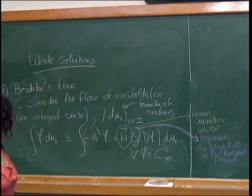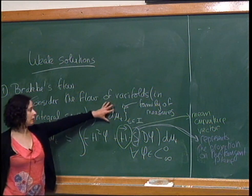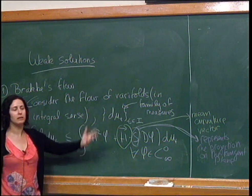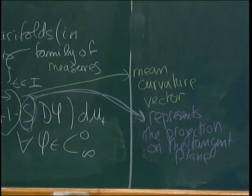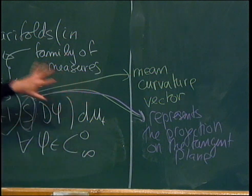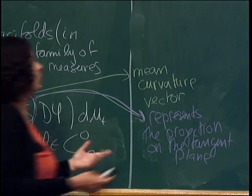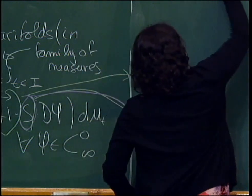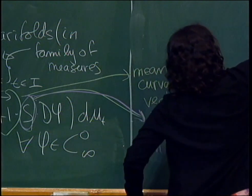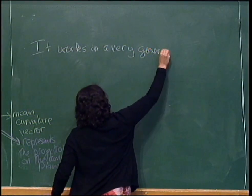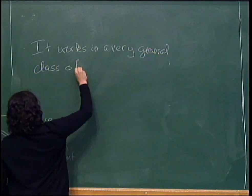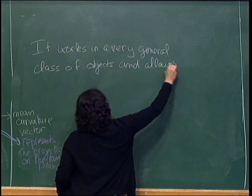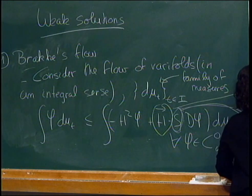This is something that is actually well-defined for very general objects — very general measures and varifolds. It has the advantage that you can do this for codimensions higher than one. Many of the singularities I had before would not be singularities in this sense, because for a measure those are not singular points. It works in a very general class of objects, allows singularities easily, and works in any codimension.